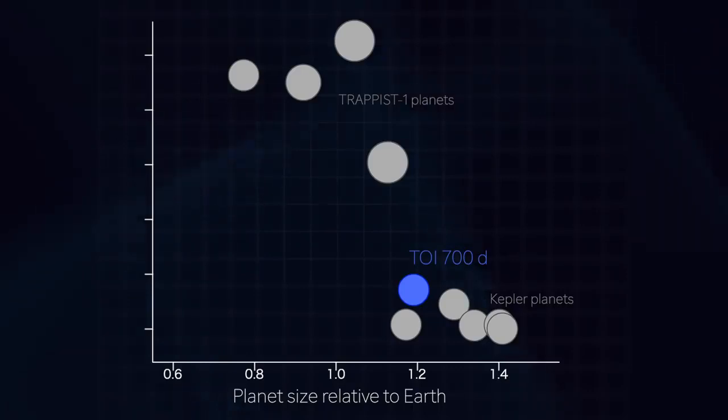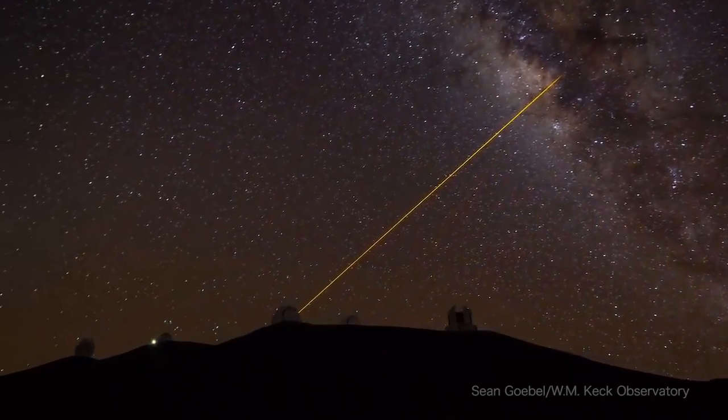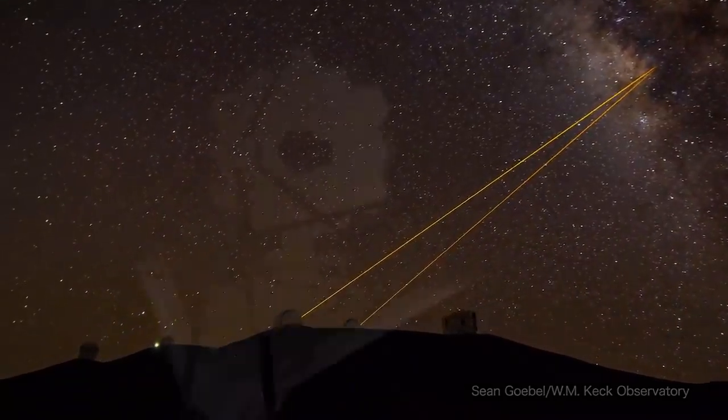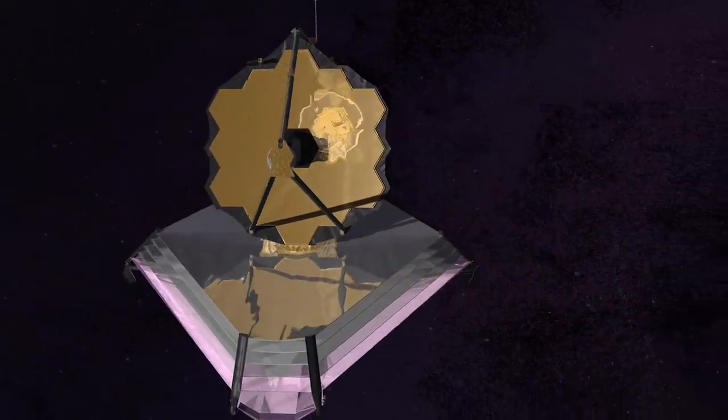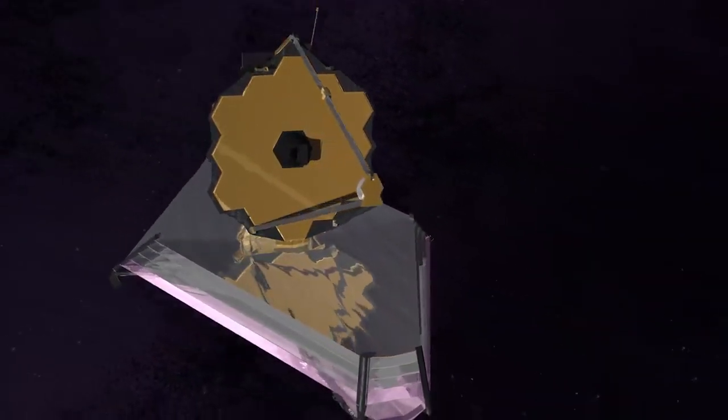Because TOI-700d is bright and nearby, the planets are good candidates for precise mass measurements by ground-based telescopes. Future missions may also tell us if the worlds have atmospheres, but scientists need to know what kinds of signals to look for.